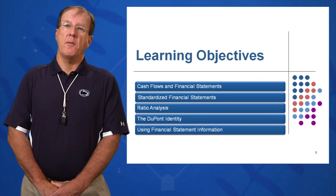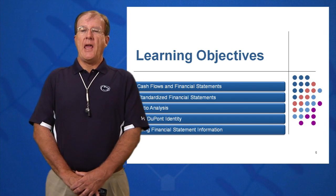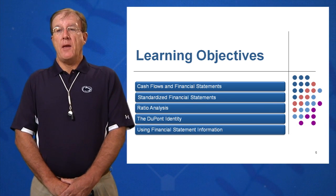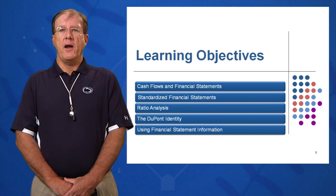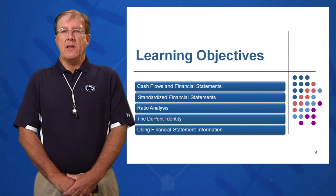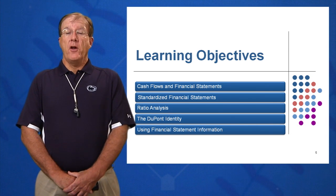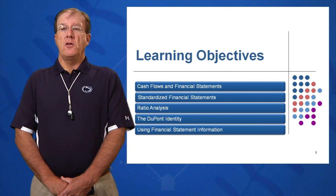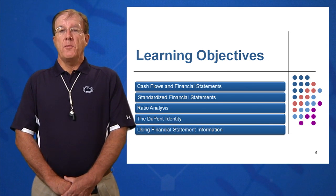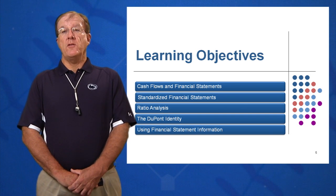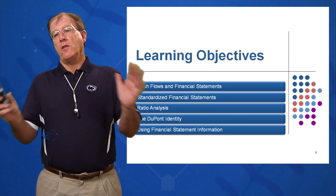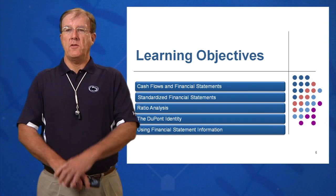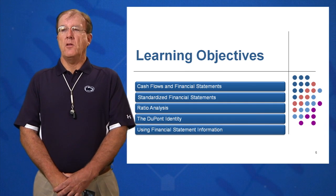Let's start with our five learning objectives. By the end of this session, we want to understand what a cash flow is and why the statement of cash flows is the most important of the three financial statements. How to standardize financial statements so we can compare a large company and a small company on a percent-of-sales or percent-of-assets basis. Third, we want to look at many key ratios used throughout industry and the banking world. Fourth, the DuPont identity — why it was developed and are there mnemonics for remembering it? Finally, how do we use all this financial statement information looking into the future?